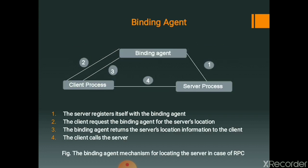As shown in the given figure, to locate a server, a client contacts the binding agent. If the server is registered with the binding agent, it returns the handle of the server to the client. First, the server registers itself with the binding agent; then the client requests the binding agent for the server's location. As soon as the binding agent finds the server location, it returns the server location to the client and the client calls the server. This is the process of the binding agent in RPC.